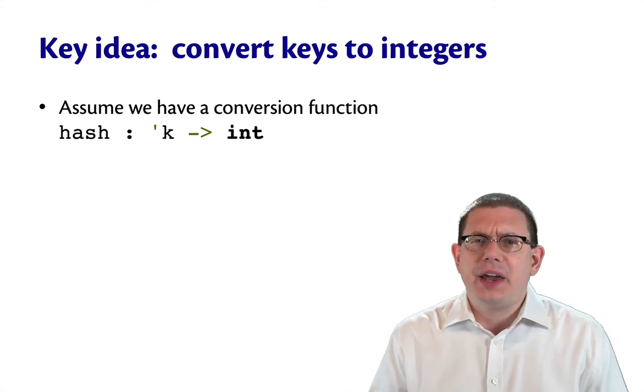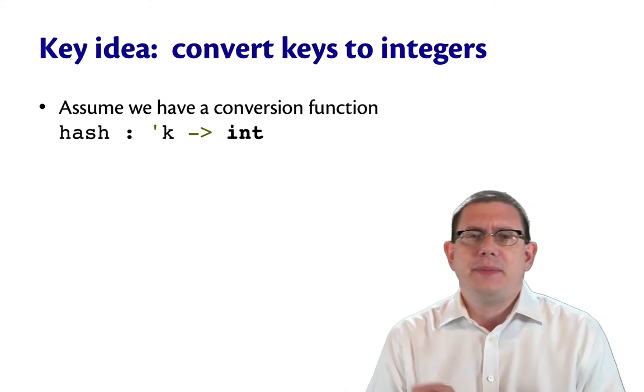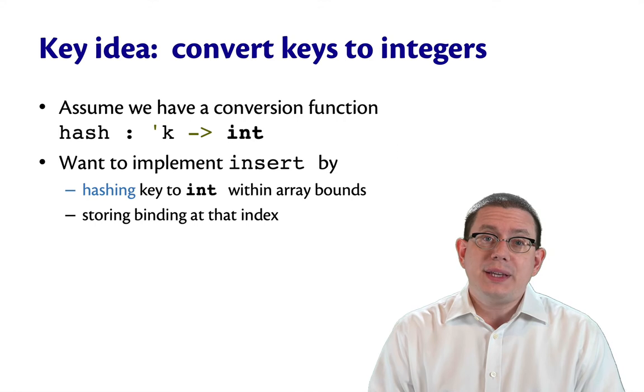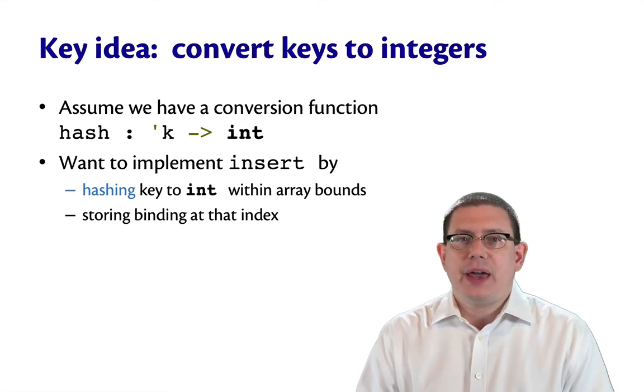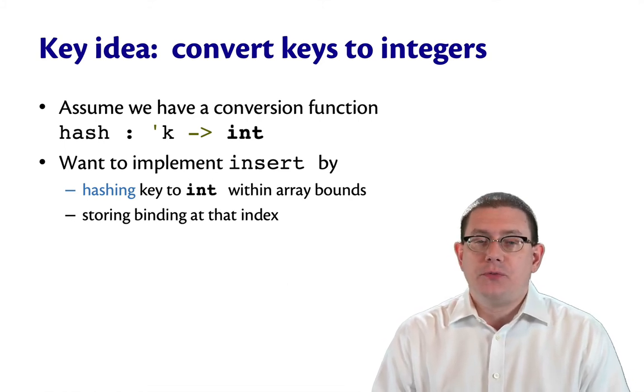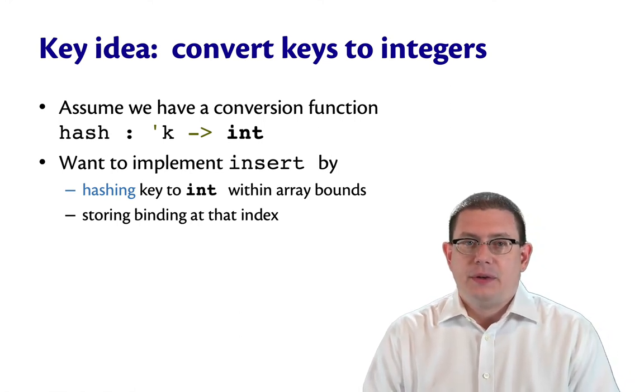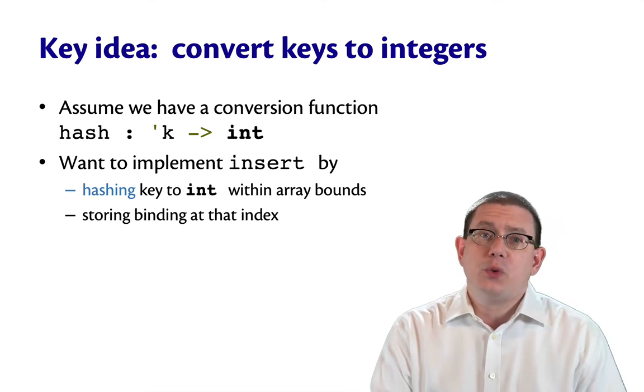The idea is you're taking whatever that key type is and hashing up everything that might be in pieces of that type to produce some kind of integer as an output. We want to implement insert by hashing a key to an int that is within the bounds for the array, and then we just store the binding at that index. So this solves the problem of keys having to be integers by assuming that there's a way to convert them.